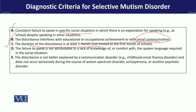Criteria C is about duration — at least one month. This means that when a child first goes to school, it is understandable if they speak less for a short while. But if after one month the child has still not started interacting in class or talking to the teacher, that becomes significant. Parents will report that the child interacts fine at home — speaking with the mother and siblings — but is unable to interact in the school situation.